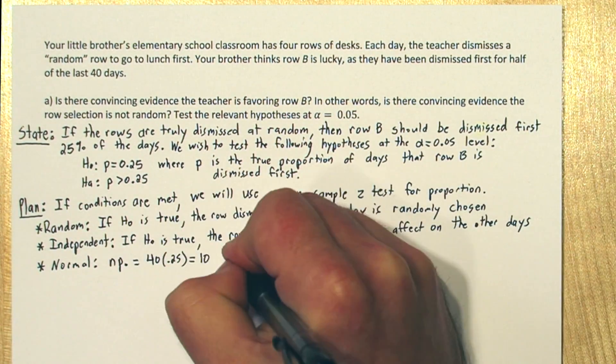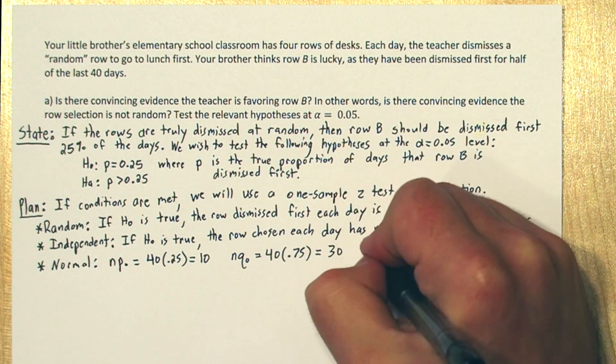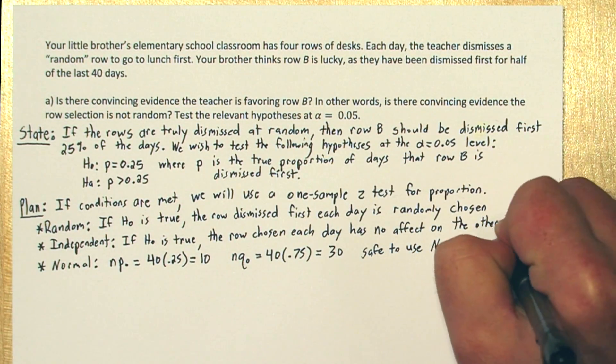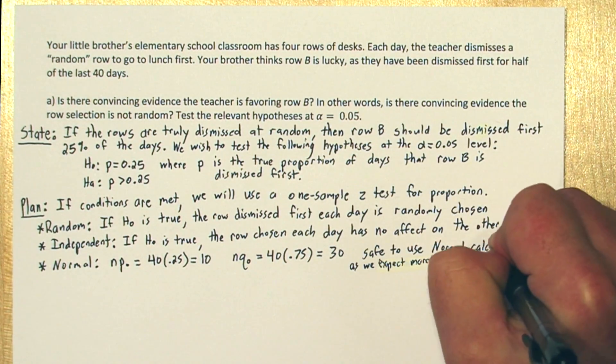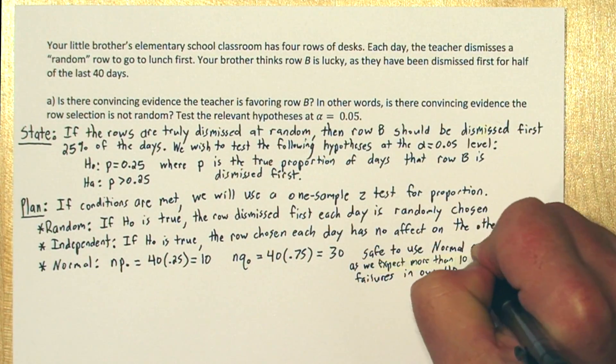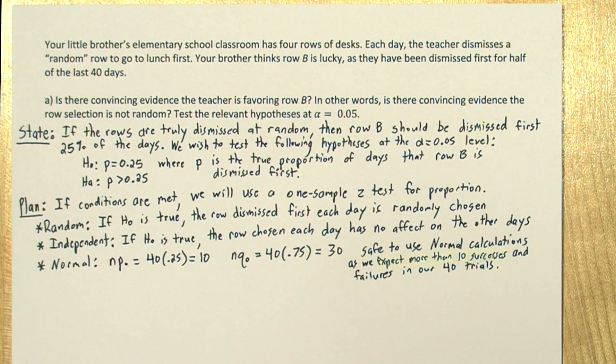Finally, the normal condition. If the null hypothesis is true, we expect 10 times for row B to be chosen first, and 30 times for row B not to be chosen first. So since both of these are greater than 10, we can do normal calculations.